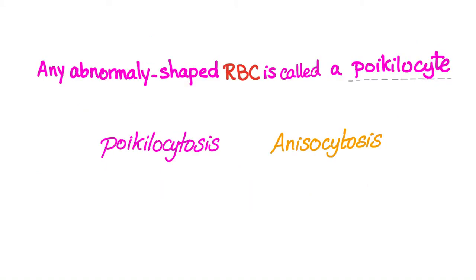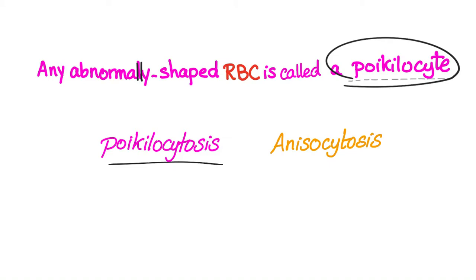Any abnormally shaped red blood cell is called a poikilocyte. So a teardrop cell is a poikilocyte. A spherocyte is a poikilocyte. An echinocyte is a poikilocyte. A schistocyte is a poikilocyte. This is called poikilocytosis. Poikilo means we have abnormal shape.